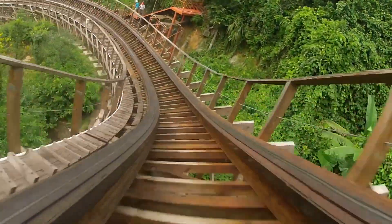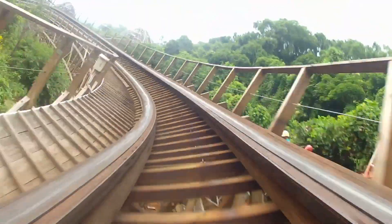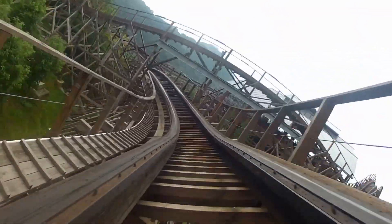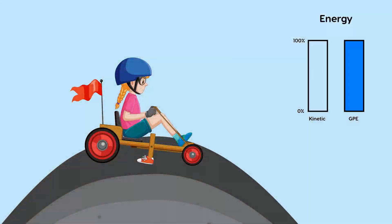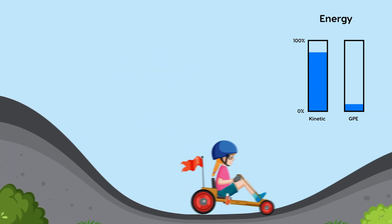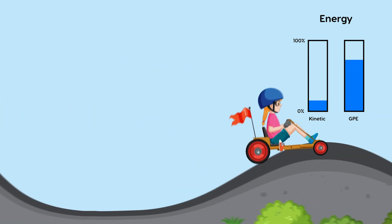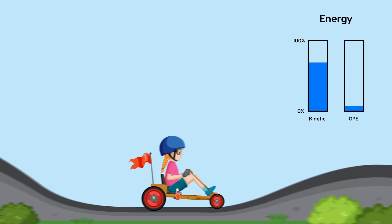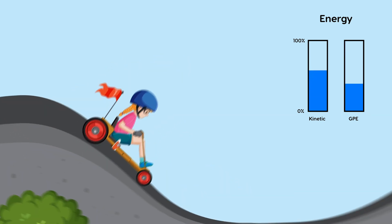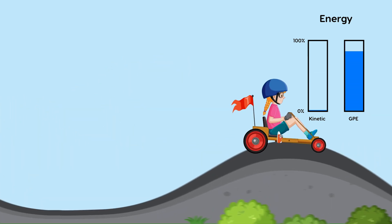The conversion of potential energy to kinetic energy. Take the girl on the boxcar on top of the hill — she has potential energy due to her position and height above the ground. As she rolls down the hill, the potential energy decreases as it is converted into kinetic energy.